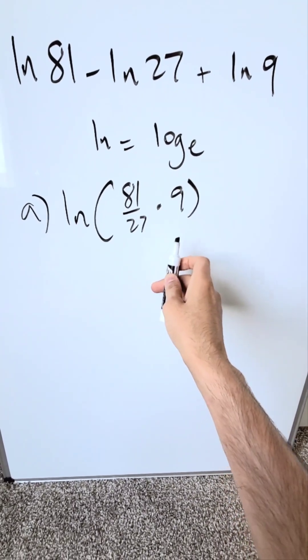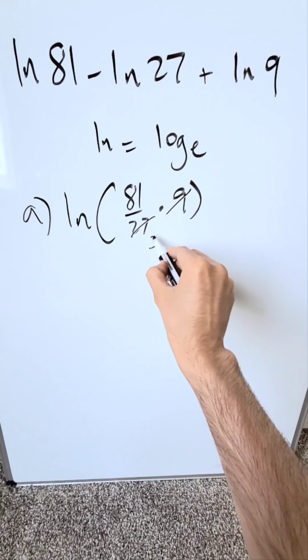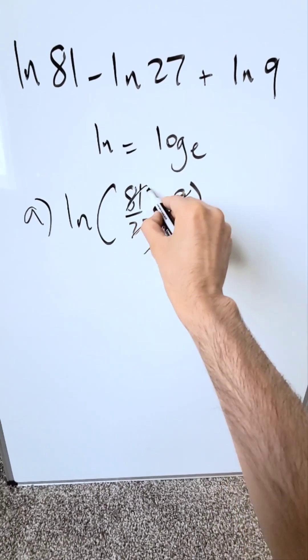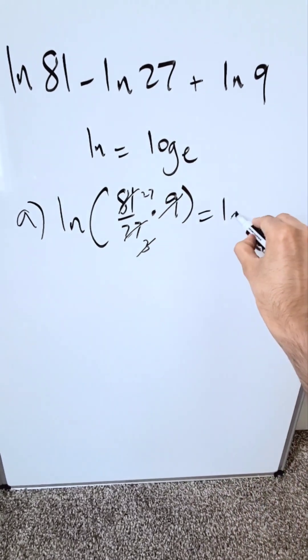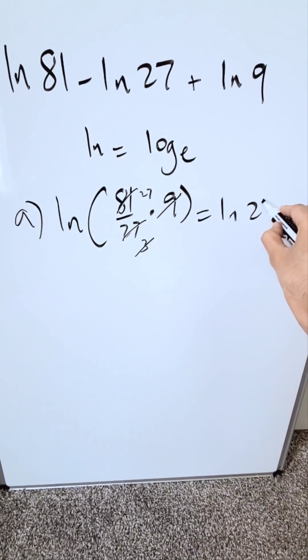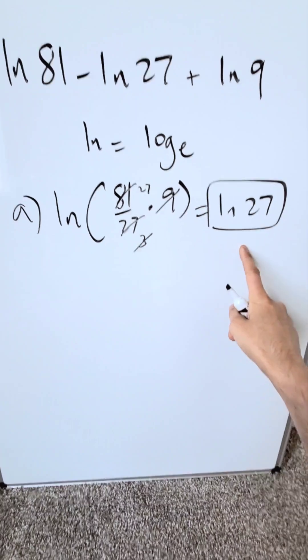All you have to do is simplify this. 9 comes into 81 three times, and 3 comes into 27 nine times — wait, 9 goes into 81 nine times, giving 27 total. My end result is natural log 27, and it is correct.